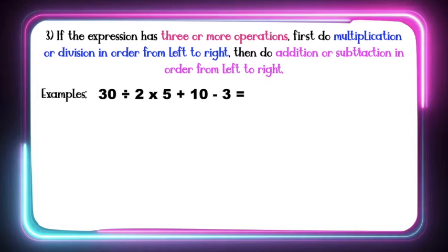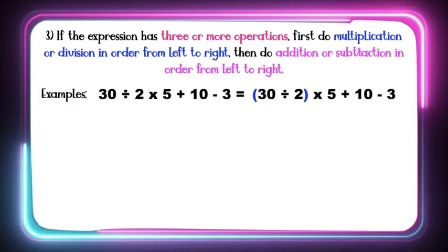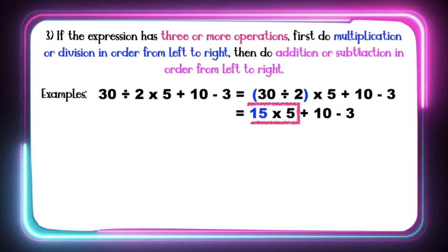Look at the equation, children. Find the division and multiplication — which comes first? The first one from the left is division, so we are going to divide 30 and 2 before we multiply. 30 divided by 2 is equal to 15. Next, we are going to multiply. 15 times 5 is equal to 75. After division and multiplication, we are now going to do addition or subtraction.